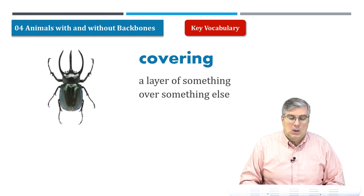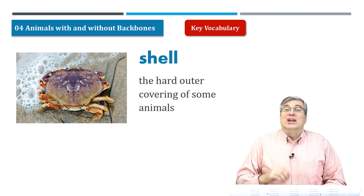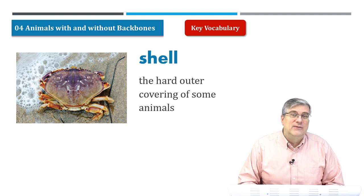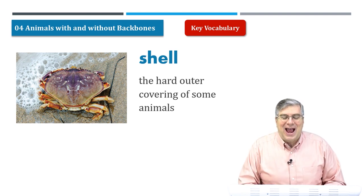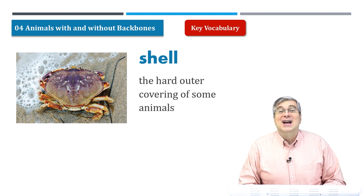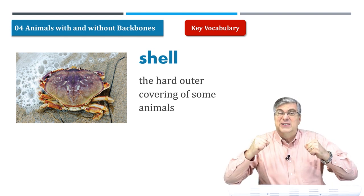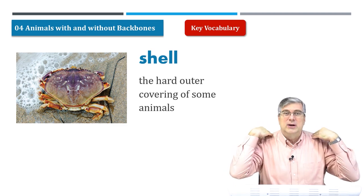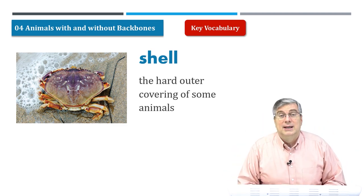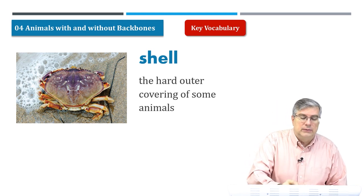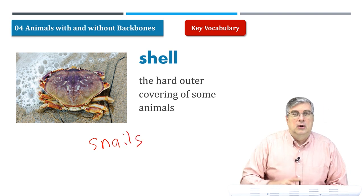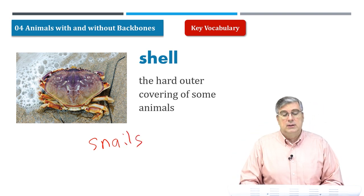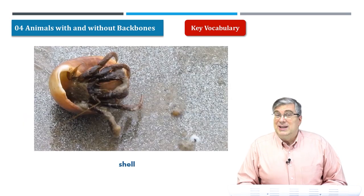Next word: shell. A shell is a type of covering. Think about a crab — it has a hard outer covering on its back. What's another animal with a shell? A snail — snails have shells and they carry the covering around on their back. Let's take a look at a video of an interesting crab changing its shell.